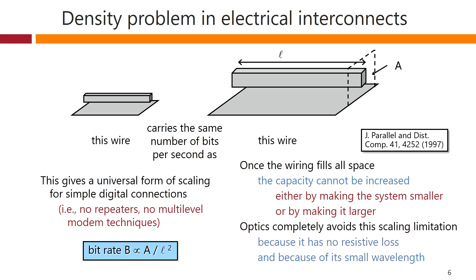Optics completely avoids this scaling limitation because it has no resistive loss and because of its small wavelength. This limit shows itself at all levels of electrically interconnected systems, from chips to cabinets — the wiring tends to fill all the available space. Indeed, most of the fabricated volume in an electronic chip is actually wiring, not transistors. This limit does not apply at all to optics, and optics effectively beats it by many orders of magnitude in practice. There are also tremendous opportunities for truly massive numbers of channels in optics.